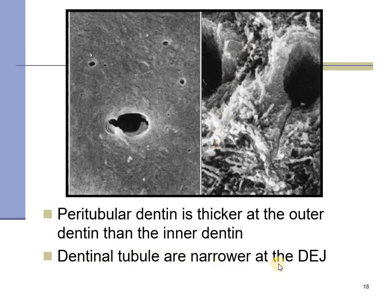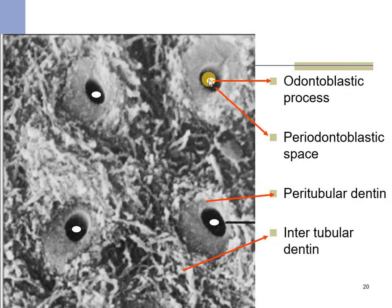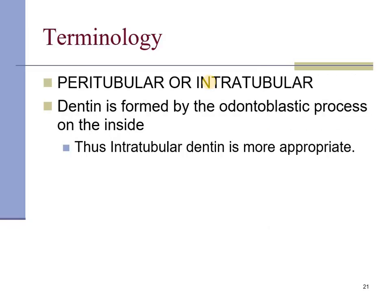The dentinal tubule is narrower at the dentino-enamel junction, and peritubular dentine is thicker at the outer dentine than at the inner dentine. Within the peritubular dentine, the empty space — called the periodontoblastic space — is filled with dentinal fluid. In the center, you may find the odontoblastic process. Since dentine is formed by the odontoblastic process from the inside, intratubular dentine is a more preferred term than peritubular dentine.